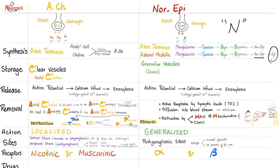Acetylcholinesterase has two types: true and pseudo. True cholinesterase is found in the axon terminus, but pseudo with the P is found in the plasma and hepatocyte.